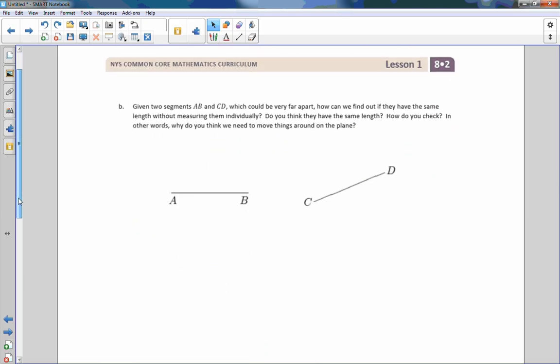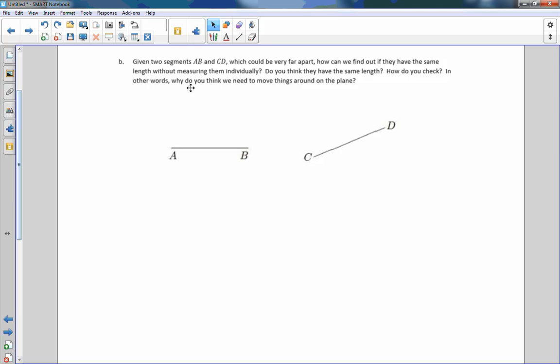All right. So now part B says, given two segments, AB and CD. Okay. And I could also name these with a line over top without arrows, which could be very far apart. So in other words, AB could be miles and miles apart. A and B could be two stars in the galaxy. And C and D could be two other stars in the galaxy that are the same distance apart. It says, how can we find out if they have the same length without measuring them individually?